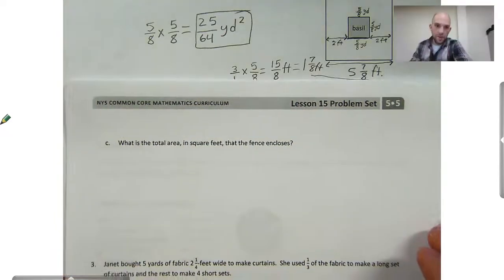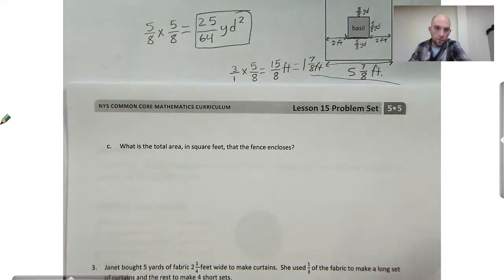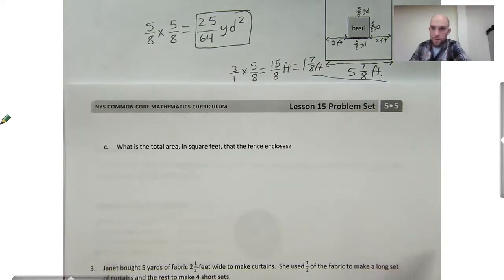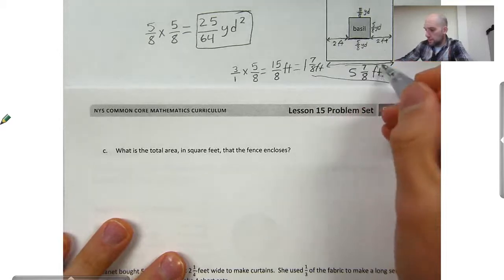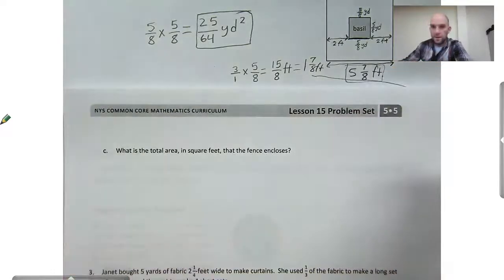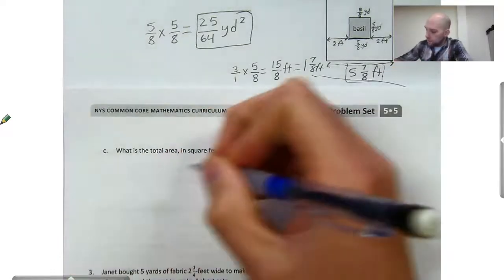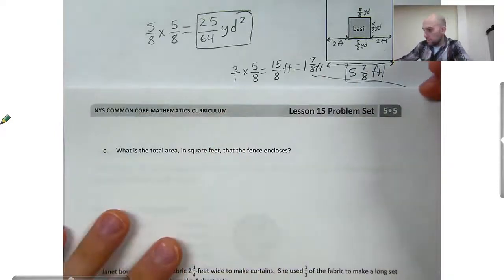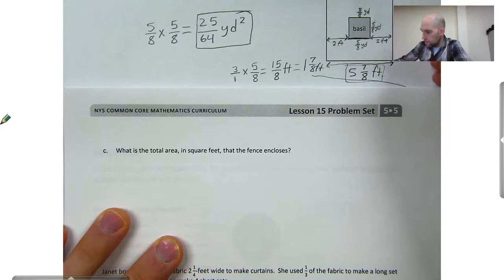The next part says, for letter C here, what is the total area in square feet that the fence encloses? So I know that each side of the fence is five-and-seven-eighths feet. So to find the area, I would have to do five-and-seven-eighths feet times five-and-seven-eighths feet. Because, since it's a square, I know that both sides will be the same.